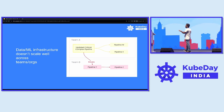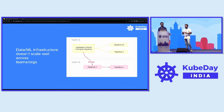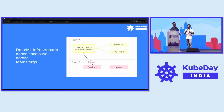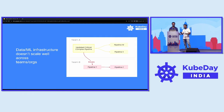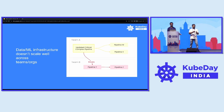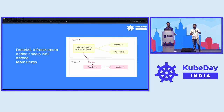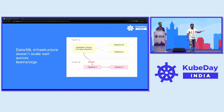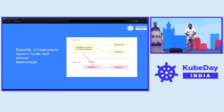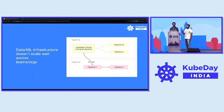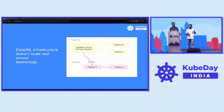If you look at our data and ML infrastructure, it doesn't scale well across teams and organizations. Different things need different teams. Let's say there is Team A, which is the ML team, and Team B is the DevOps team. Team A is responsible for the machine learning pipelines. They made some critical update — a pipeline update — and unexpectedly they also broke pipeline Y and pipeline Z, which was not their responsibility; it belonged to the DevOps team. This unintentional interference happens every time, and that's why dedicated infrastructure is required when you scale across teams.